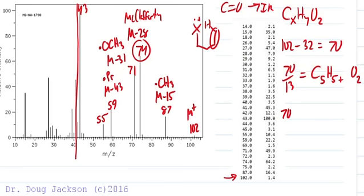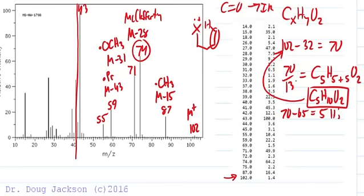13 times 5 is 65, so 70 minus 65 is 5 more H's. Adding those in the molecular formula, we get C5H10O2, and that adds up to the molecular ion, 102.